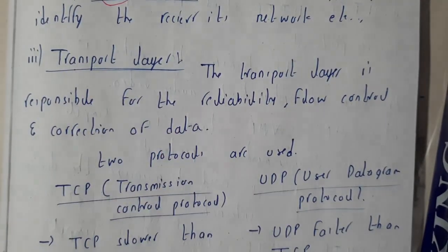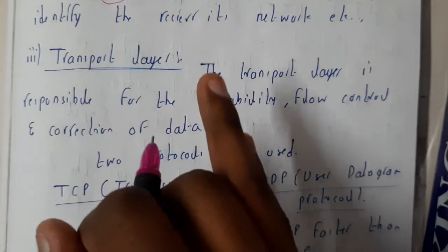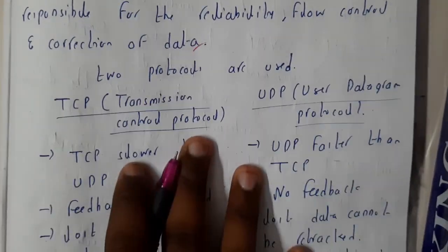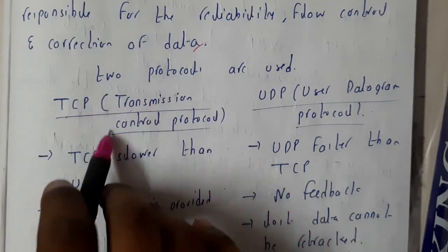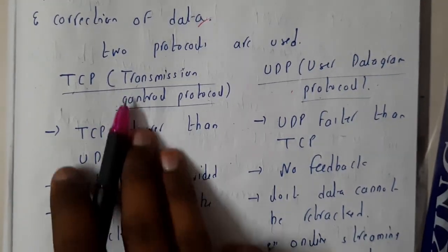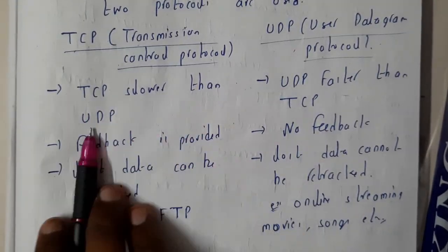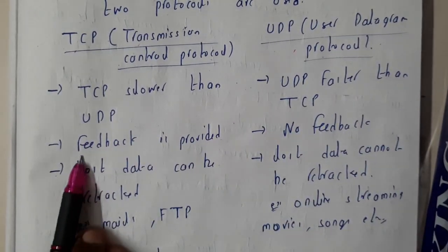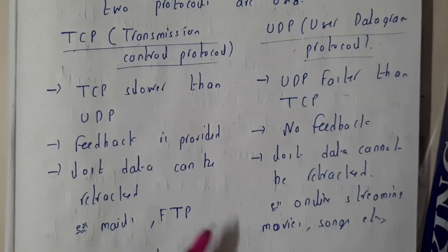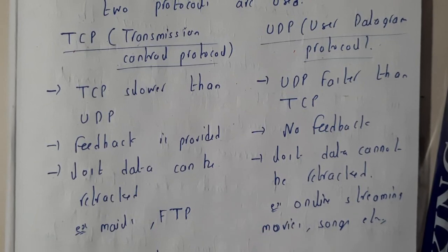The transport layer is responsible for reliability, flow control, and correctness of data. It uses two protocols: TCP (Transmission Control Protocol) and UDP (User Datagram Protocol). TCP is slower but provides feedback and allows lost data to be retransmitted — used for mail and file transfer. UDP is faster but provides no feedback — used for web casting, movies, and songs.